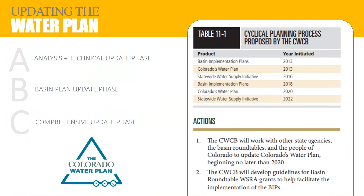We are changing our messaging to reflect that this is all part of the water plan itself — there are just different aspects to the Colorado Water Plan. We are in the analysis and technical update phase right now, and we will be releasing this study in July of this year. We have some data visualization work that will be on the website within the next six to nine months, with more innovative ways of displaying the data. We will then pivot into an update of the basin plan for each of the roundtables and ultimately update the comprehensive water plan itself.